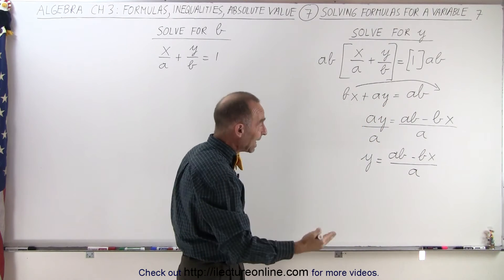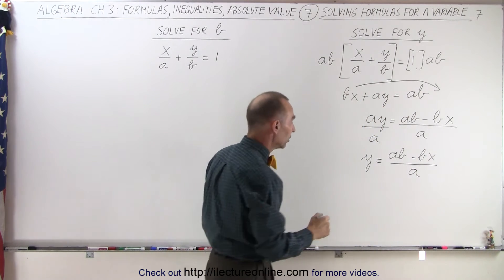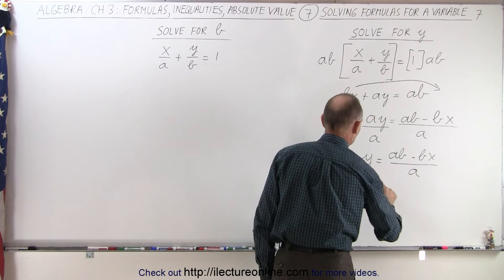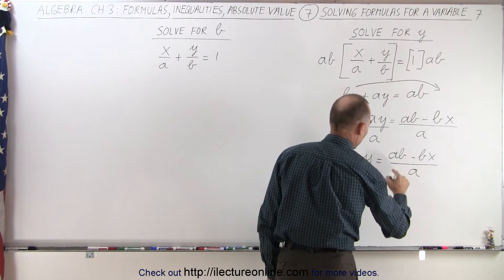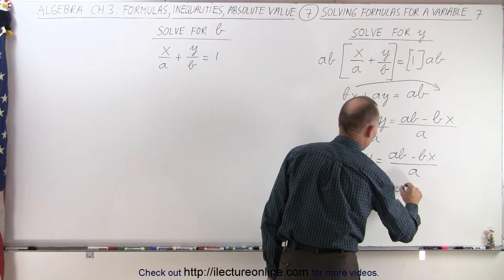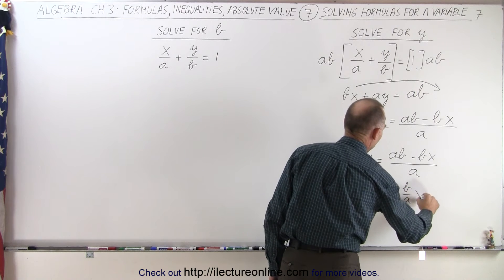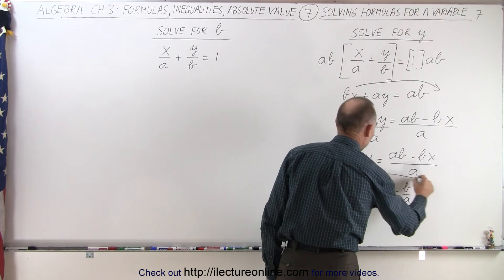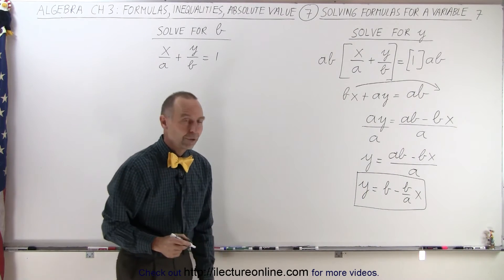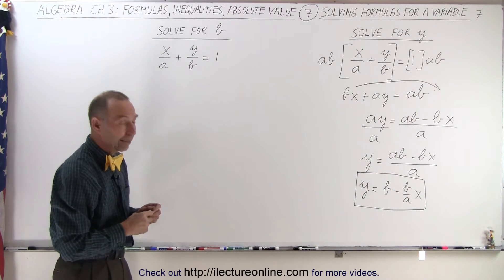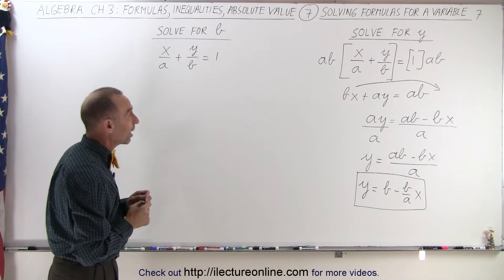I could potentially divide a into the two terms in the numerator, so I could also write this as y equals b minus b over a times x. Either way is perfectly fine. That may be the preferred final answer. And that is how you do it on the first case.